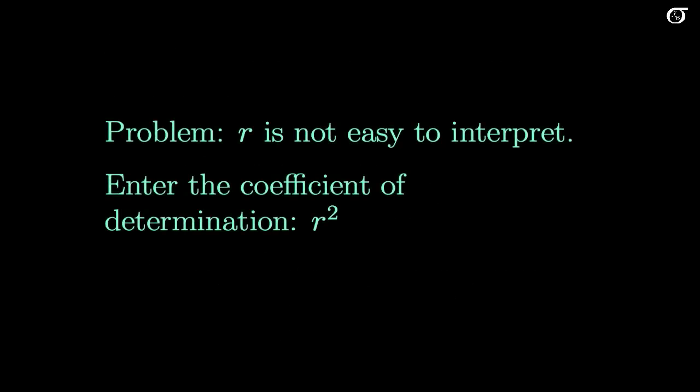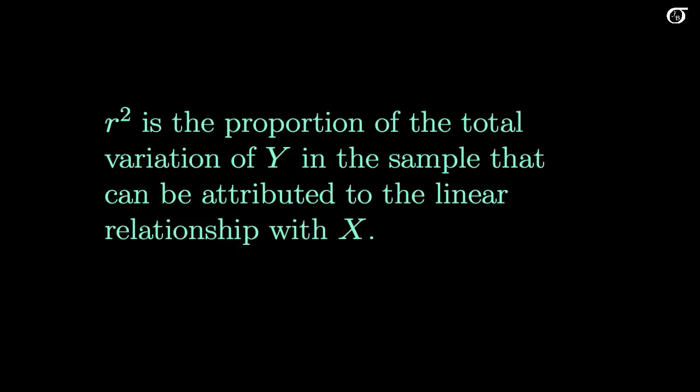Now one problem here: R is not all that easy to interpret. So we're going to look at the square of R, which we sometimes call the coefficient of determination, and that has a nicer interpretation. R squared is the proportion of the total variation of Y in the sample that can be attributed to the linear relationship with X.